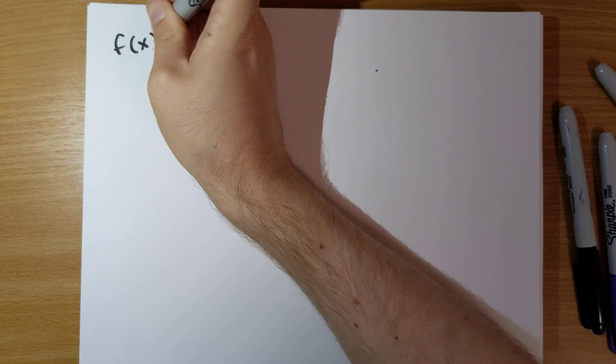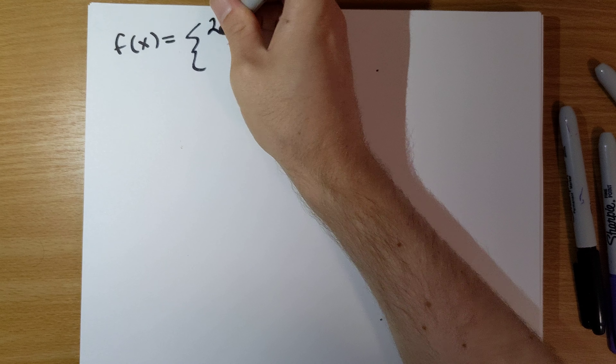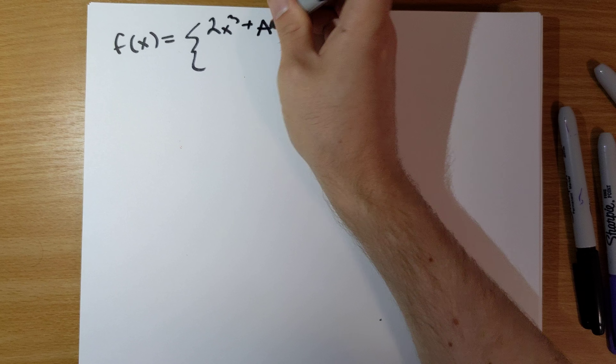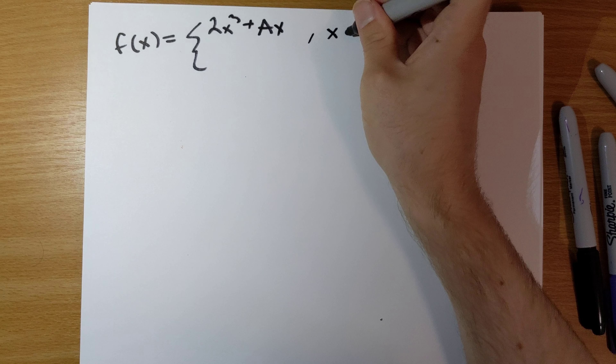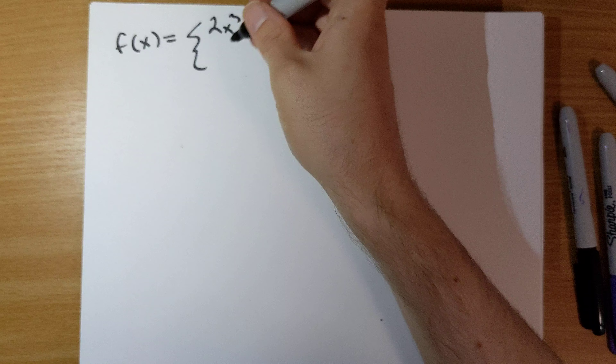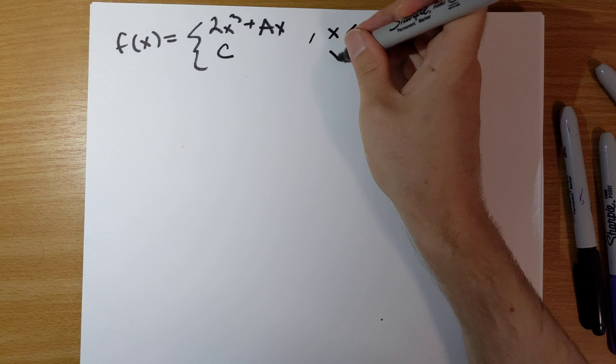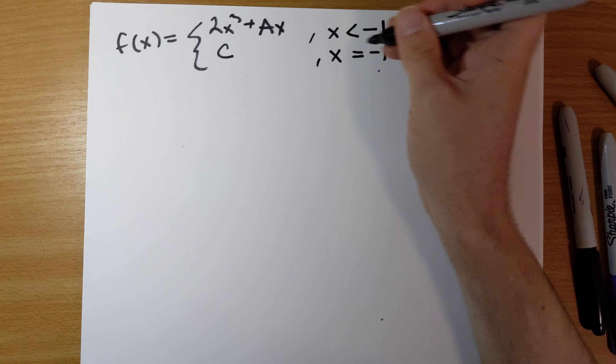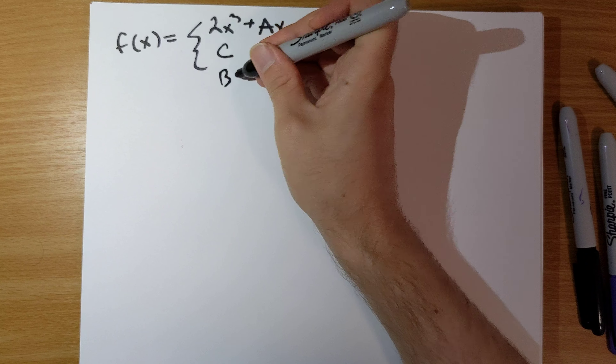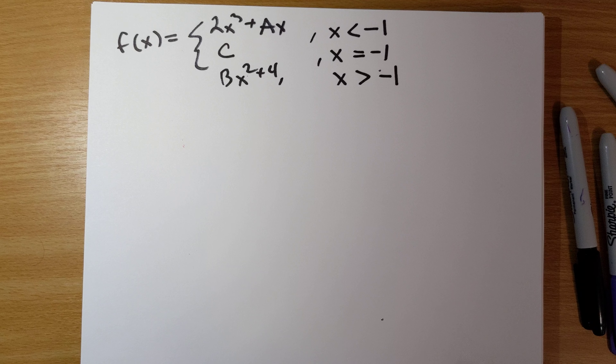Problem number 35, a piecewise defined function. f of x is 2x cubed plus ax if x is strictly less than negative 1; it's equal to c if x is equal to negative 1; and it's equal to bx squared plus 4 if x is strictly larger than negative 1. a, b, and c are unspecified constants.